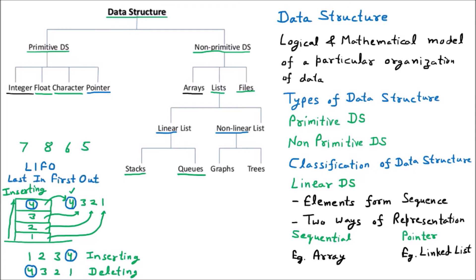Now we are taking the example of numbers. We are having the numbers 7, 8, 6, and 5, and we want to insert them into the stack. Stack is like a bucket. We are inserting into this bucket: first 7, then 8, then 6, then 5. So in this bucket we have inserted all the numbers. The insertion order is 7, 8, 6, 5.